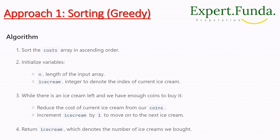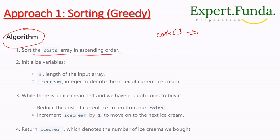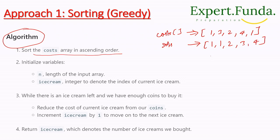Now for the approach — the first approach is a greedy approach using sorting. The algorithm sorts the cost array in ascending order. So if costs were [1, 3, 2, 4, 1], after sorting it becomes [1, 1, 2, 3, 4]. This way we always buy the cheapest ice cream first to maximize the count.